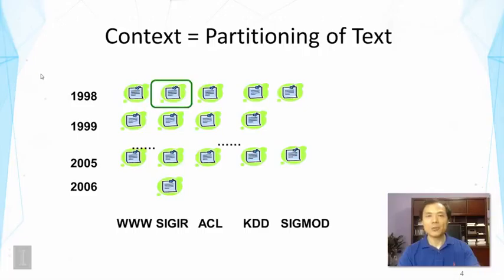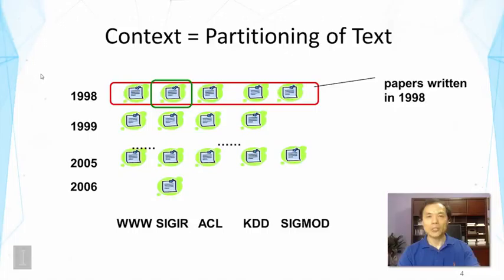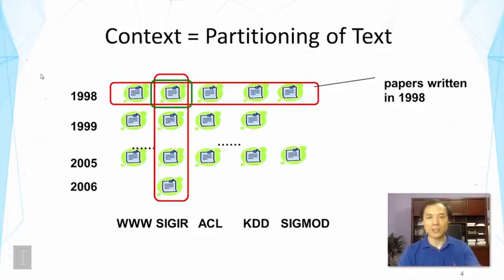Here is an illustration of how context can be regarded as interesting ways of partitioning text data. Here I show some research papers published in different years, on different venues, different conference names listed on the bottom, like SIG-IR, ACL, etc. Such text data can be partitioned in many interesting ways because we have context. The context here includes time and the conference venues. We can treat each paper as a separate unit — a paper ID — and each paper has its own independent context.